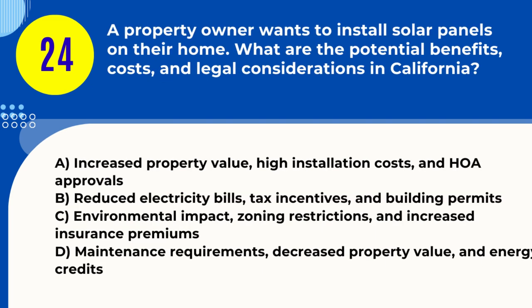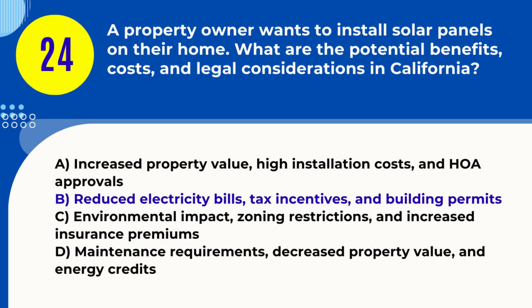Question 24. A property owner wants to install solar panels on their home. What are the potential benefits, costs, and legal considerations in California? A. Increased property value, high installation costs, and HOA approvals B. Reduced electricity bills, tax incentives, and building permits C. Environmental impact, zoning restrictions, and increased insurance premiums D. Maintenance requirements, decreased property value, and energy credits. Answer: B. Reduced electricity bills, tax incentives, and building permits. Explanation: Installing solar panels in California can lead to reduced electricity bills, potential tax incentives, and may require obtaining building permits.